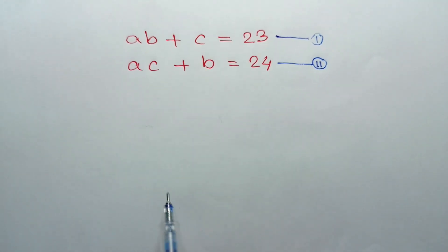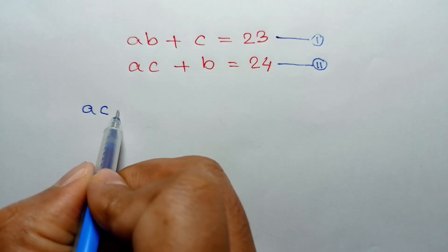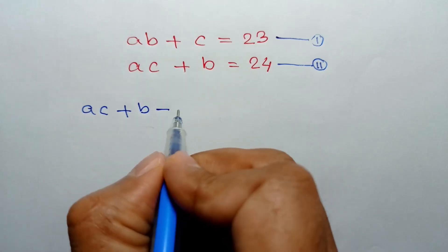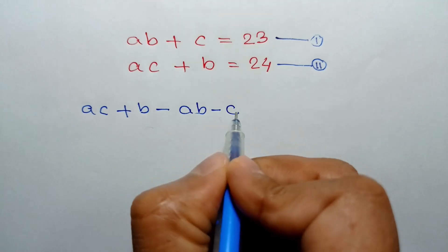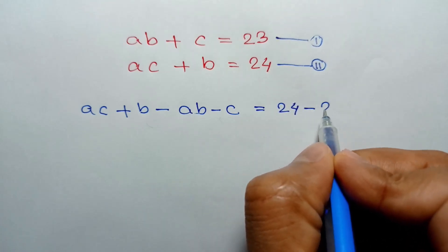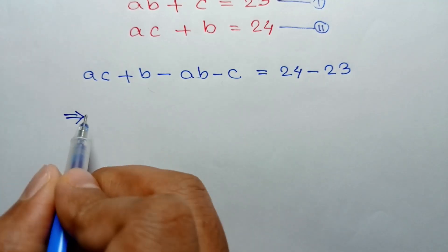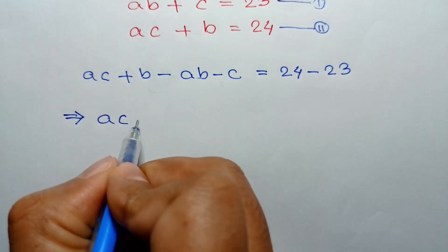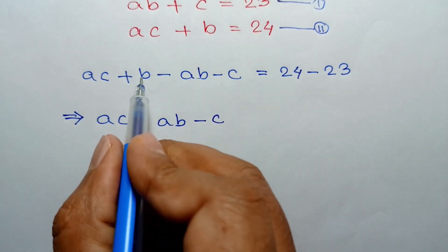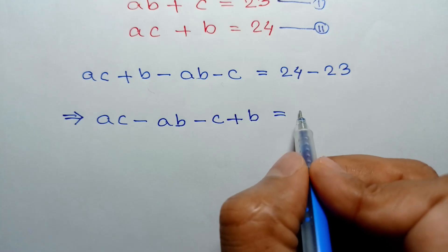If we subtract equation 1 from equation 2, we can write: AC plus B minus AB minus C is equal to 24 minus 23. Rearranging the left side we can write AC minus AB minus C plus B is equal to 1.